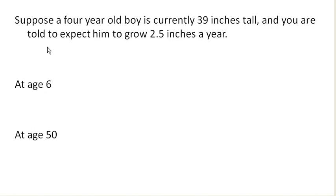And so we might write an explicit linear equation saying, well, my current or initial population, or in this case, height is 39 inches tall, and we're expecting that to increase by two and a half inches per year. So this is my common difference. So we're expecting it to increase by two and a half inches per year for each year.